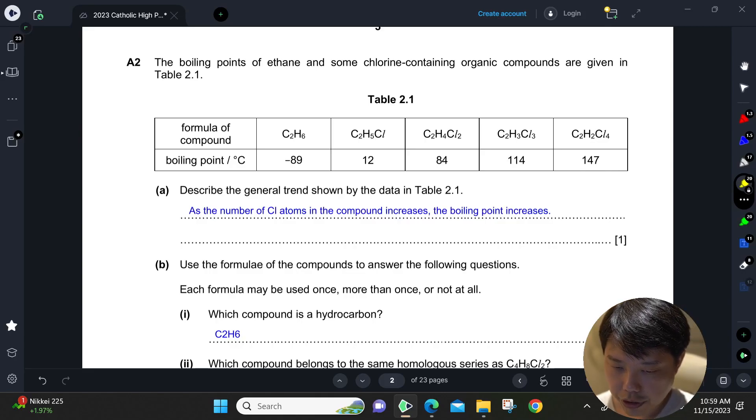All right guys, let's look at question number two. We are given a table of boiling points for ethane and also some chlorine-containing organic compounds. So table here 2.1, you're given all the formulas and then you are also given the boiling point.